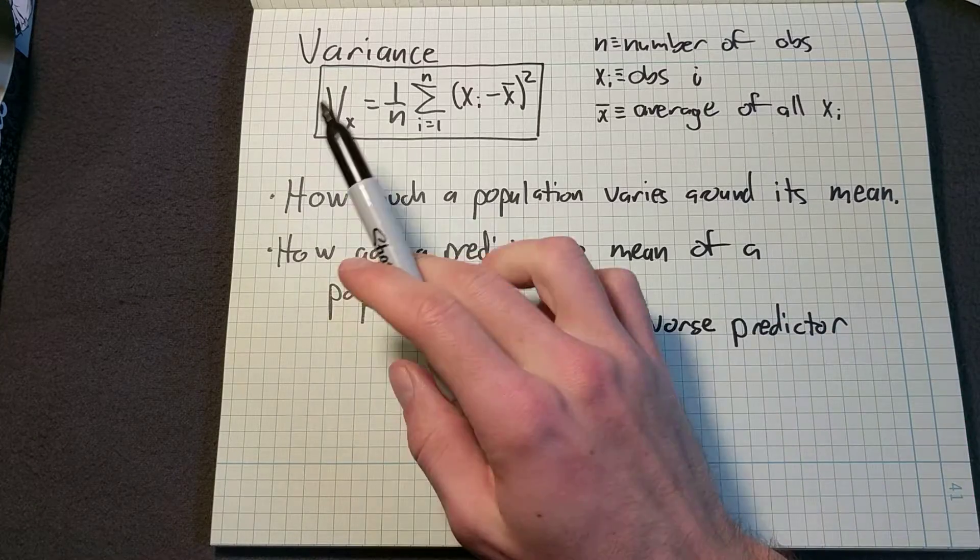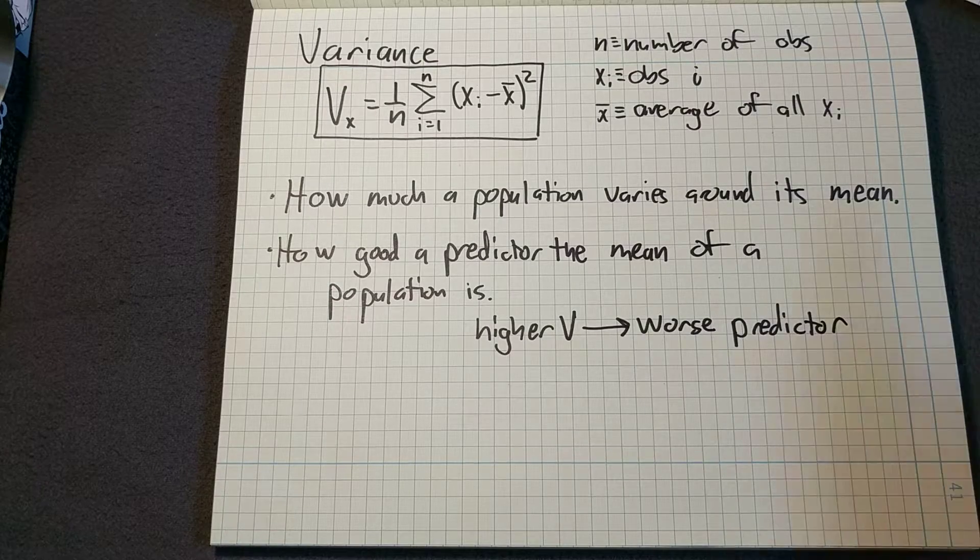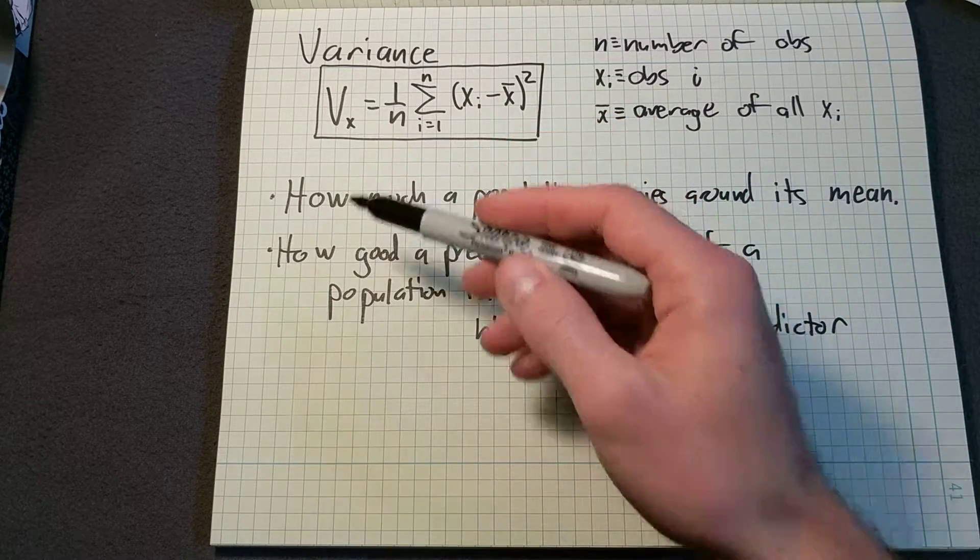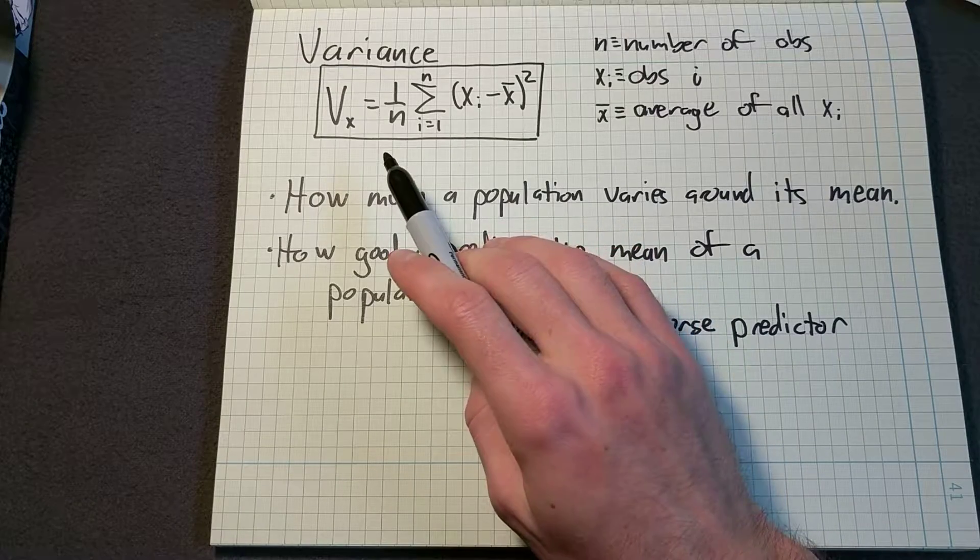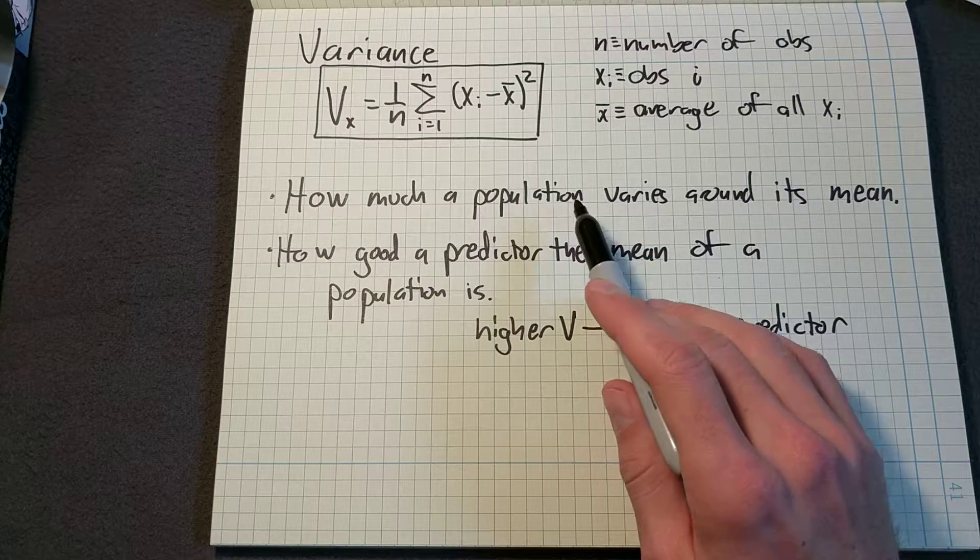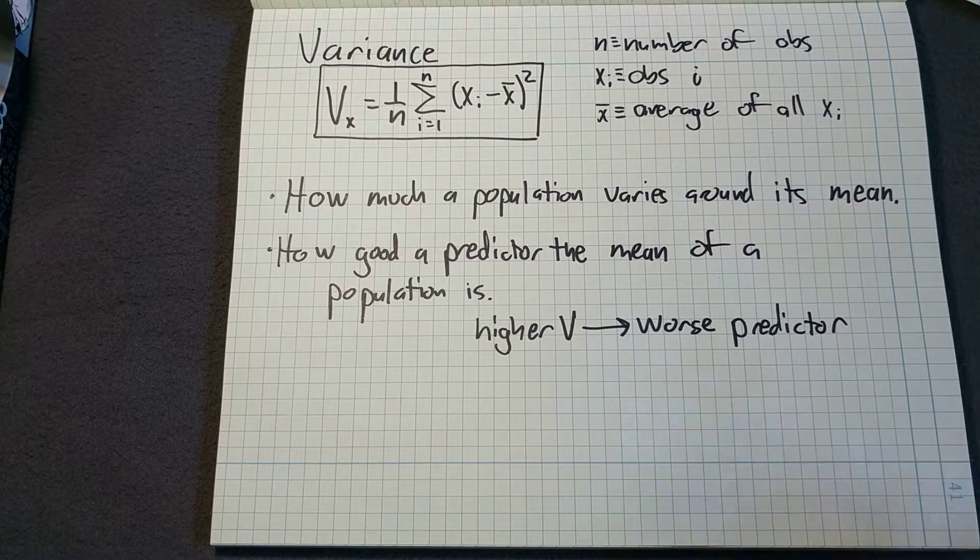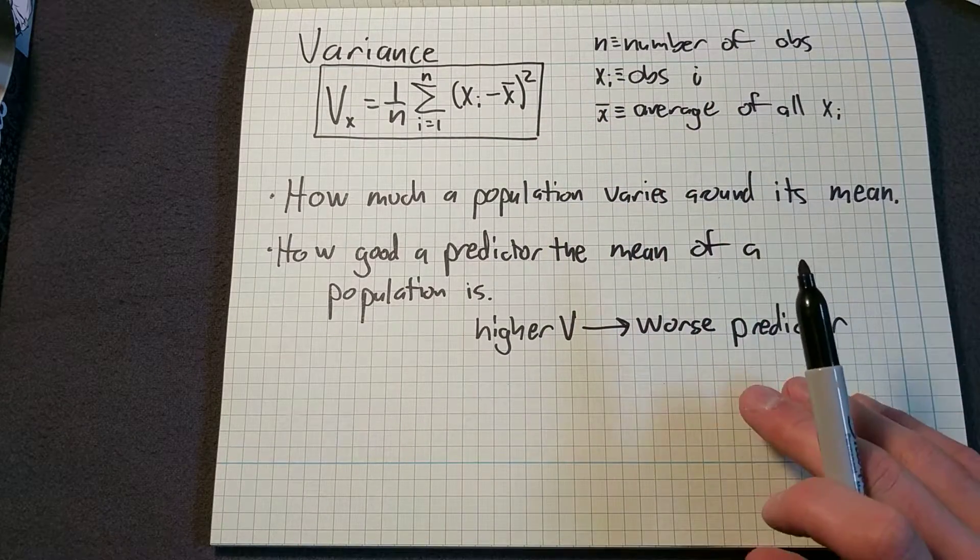So, here is our equation for variance. And one question you may have had in our derivation was why do we divide by n? The answer is that we divide by n such that we can compare the variance of two populations that have a different number of observations. So let's see this in action.